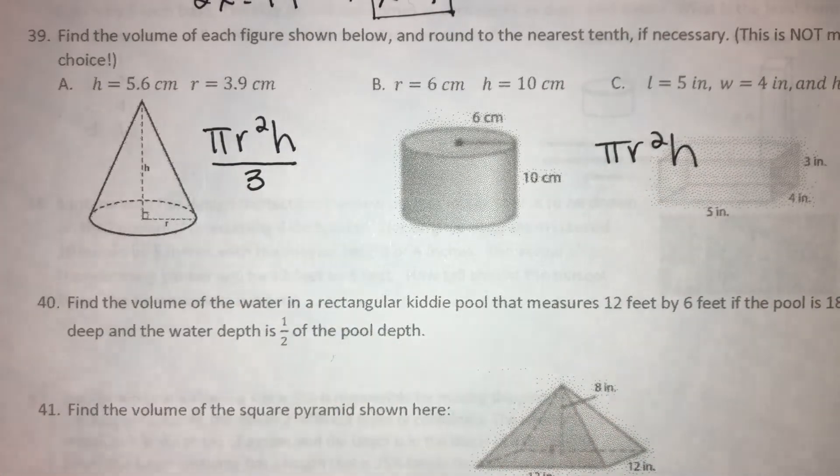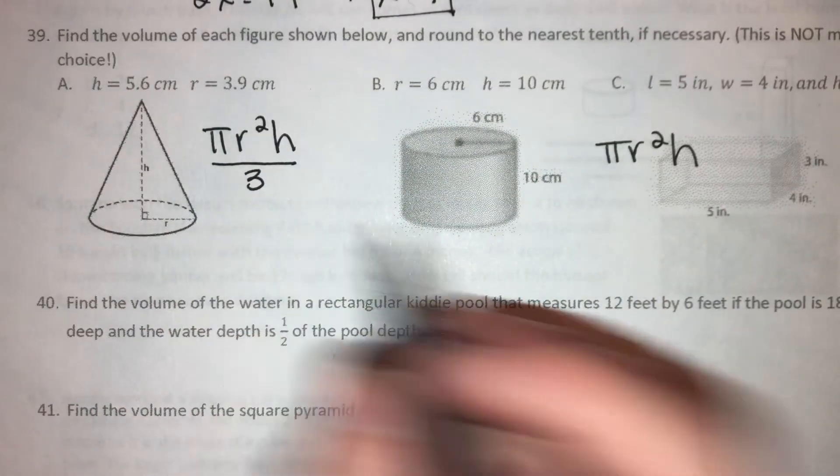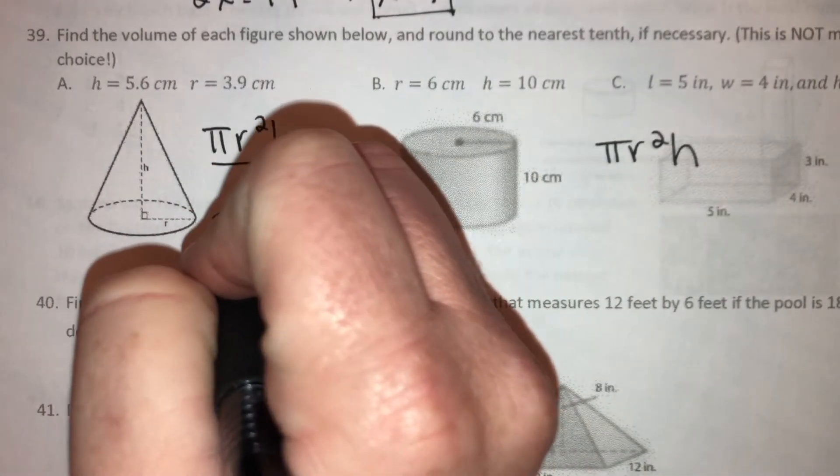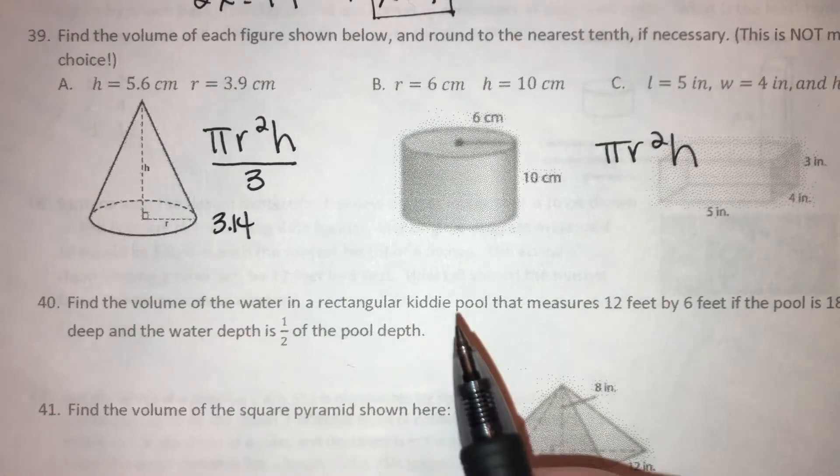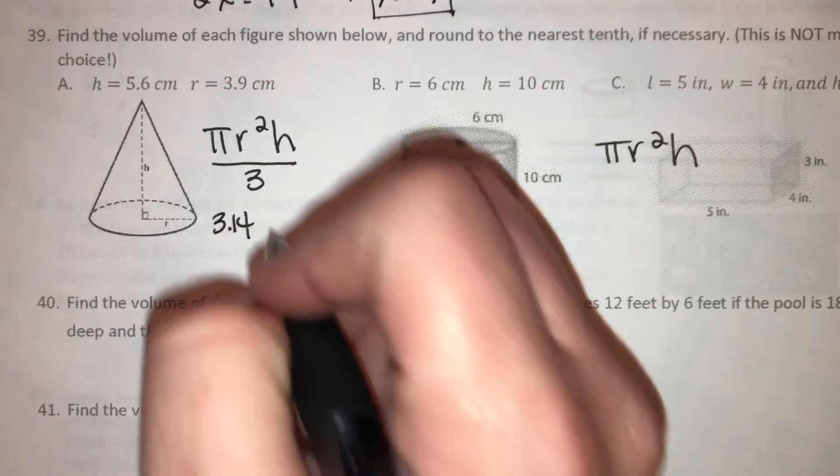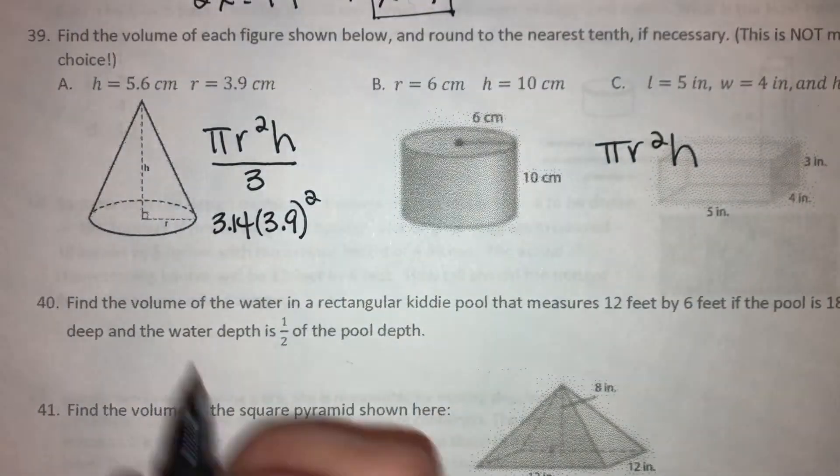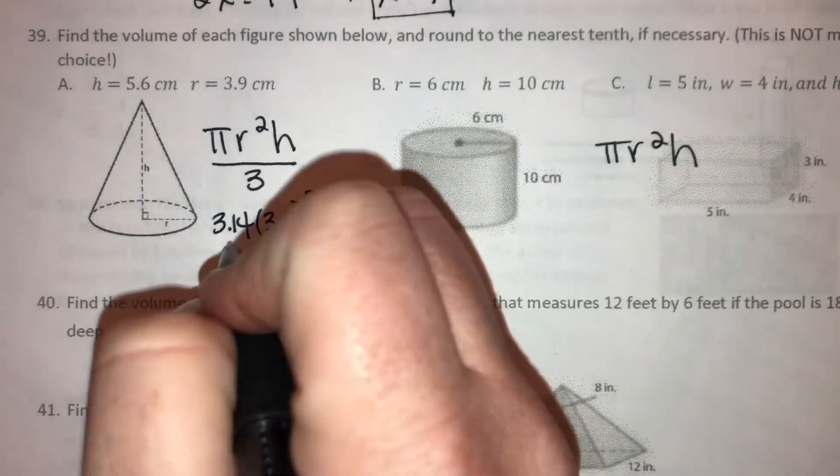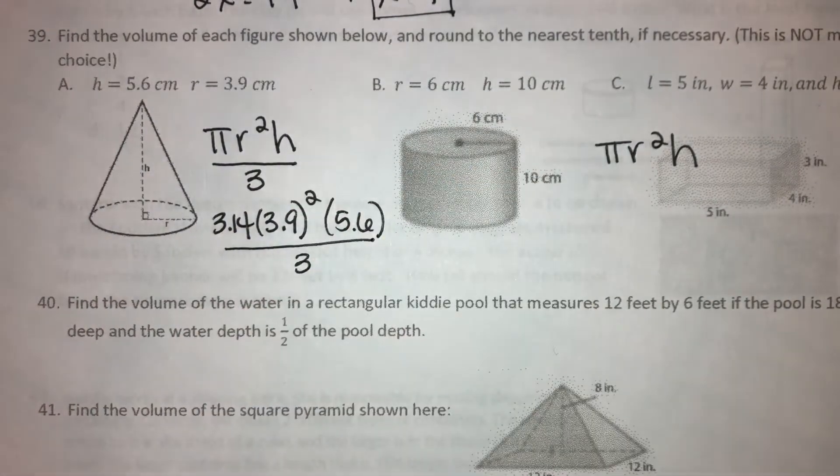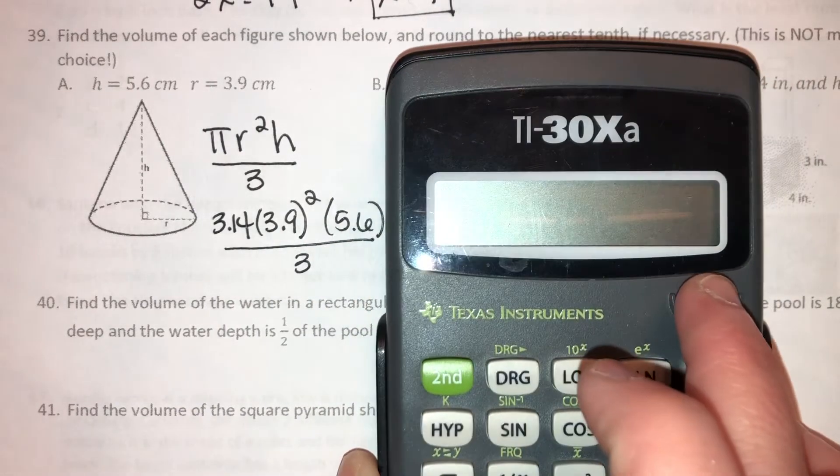All right, so here, we're just gonna plug in our numbers. So pi, does it tell us it's no multiple choice? Round to the nearest tenth. We're gonna use 3.14 for pi. Our radius here is r. We don't know what, oh, sorry, 3.9 squared times the height, which is 5.6, all divided by 3. And this would be a calculator question. So once you have that, you would just use your calculator to find it.